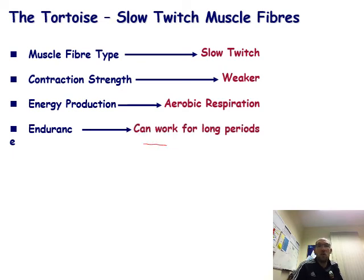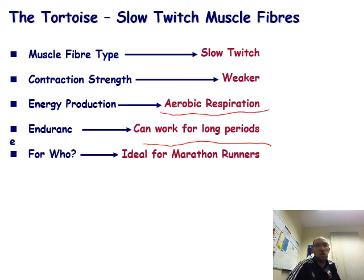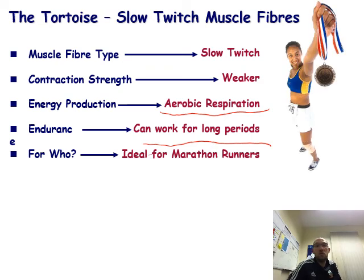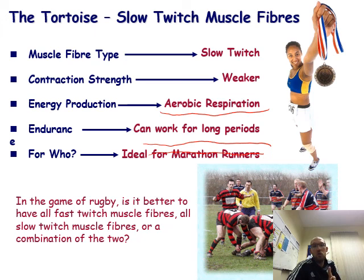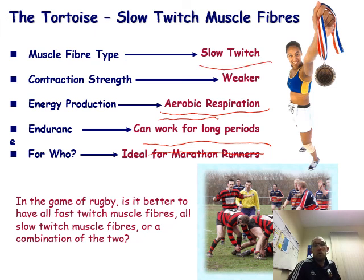Slow twitch fibers use aerobic respiration and last over long periods of time. Football uses a combination of aerobic and anaerobic respiration due to sprinting and stopping. For slow twitch fibers we're looking for examples like the marathon, where you run at a steady pace for a long time — weak muscle contractions sustained over a long period.